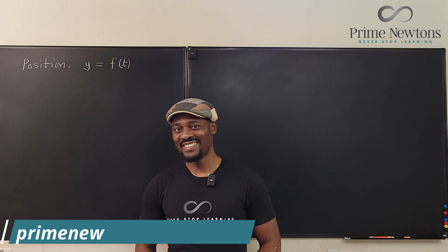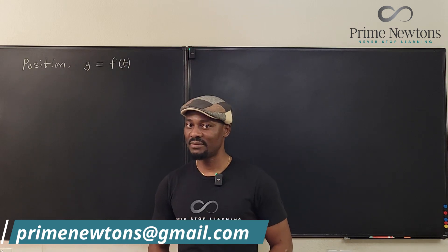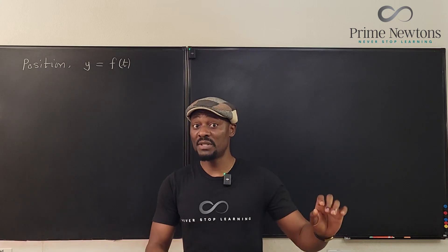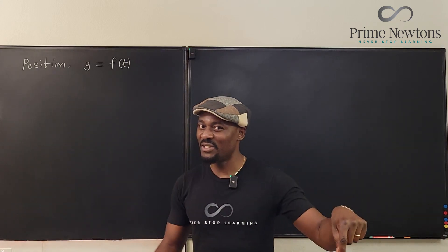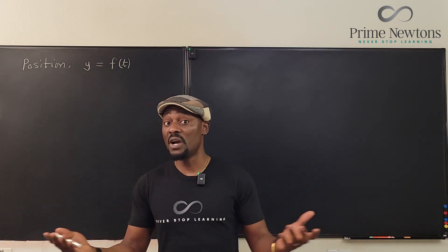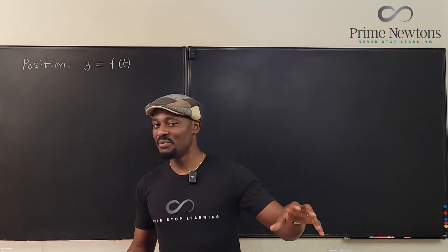Welcome to another video. Let's talk about what happens to a position function. Suppose we have a function that describes the position of an object in space, and suppose the position is determined by time, which means the object might be moving or not moving. But to make things nice, let's assume the object is moving.